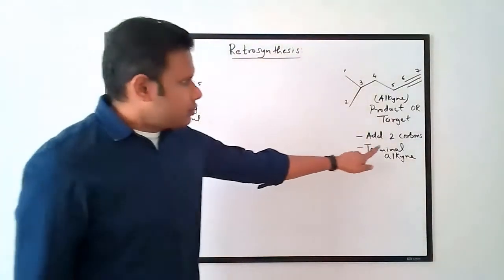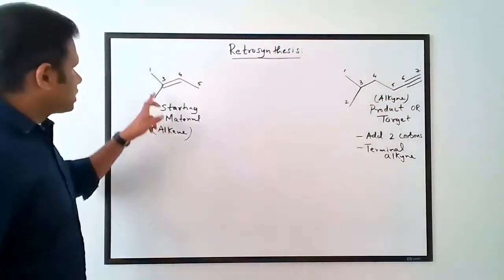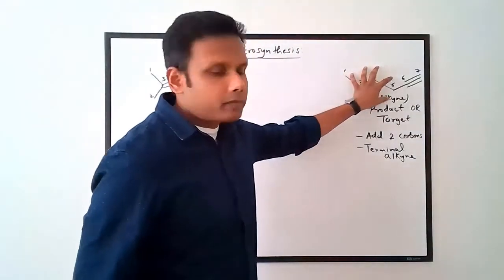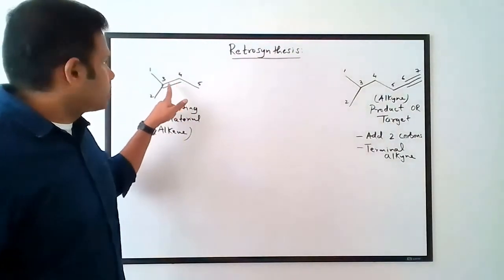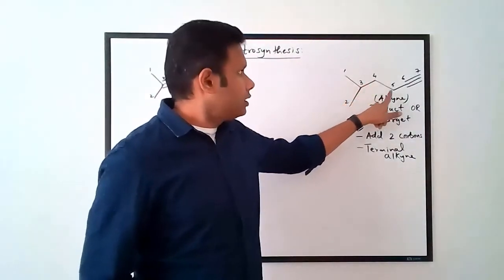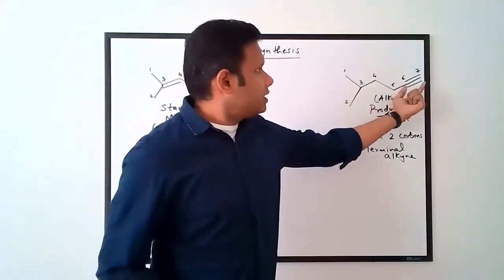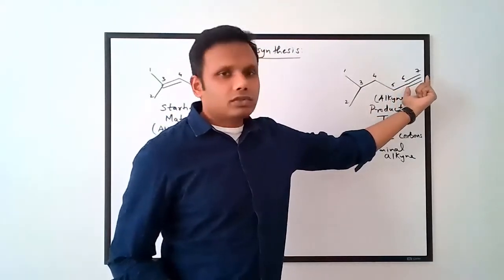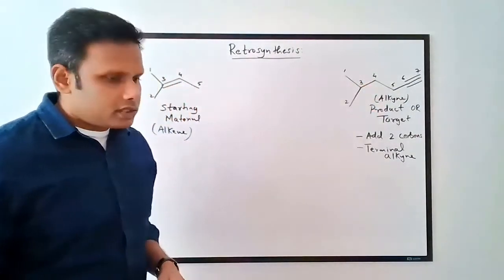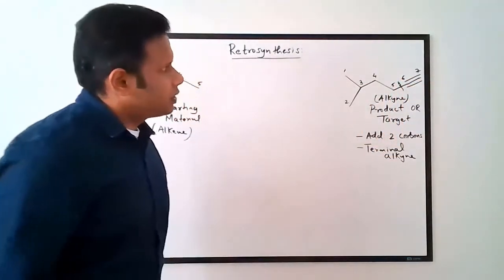So we have to add two carbons and my product is a terminal alkyne. If I look at this, it looks like the five carbons from the starting material are preserved in the product. The difference is there was a double bond between carbons three and four and that is gone in the product. On carbon five there is an acetylene group connected to it — two carbons with a triple bond. How do I make something like that? The question I want to ask myself is: how would I make this bond?